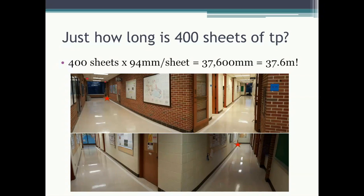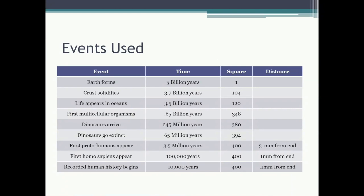So just how long is 400 sheets of toilet paper? 400 sheets times 94 millimeters per sheet works out to 37,600 millimeters — that's 37.6 meters in length. The timeline took up space in three hallways. Here were the events used: Earth's formation, solidifying of the crust, life appearing in the oceans, the first appearance of multicellular organisms, the arrival and extinction of the dinosaurs, the arrival of the first proto-humans, the first Homo sapiens, and finally recorded human history. Recorded human history over the last 10,000 years occurs at one-tenth of one millimeter from the end.